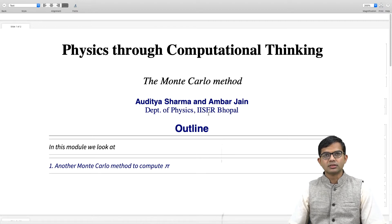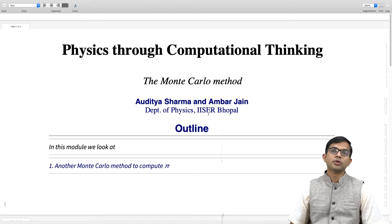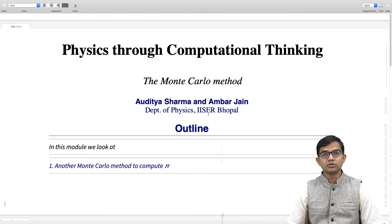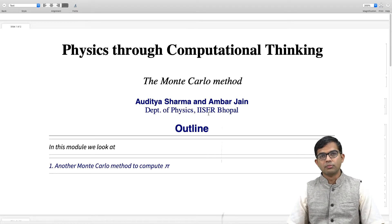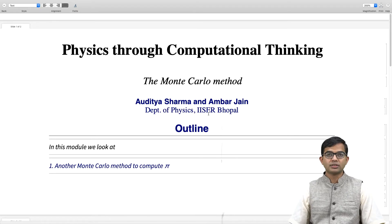One more example which I will discuss in this particular module is that of computing pi by an alternate method. We already saw one method of computing pi using an integral and using importance sampling.